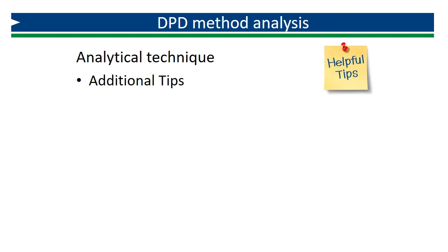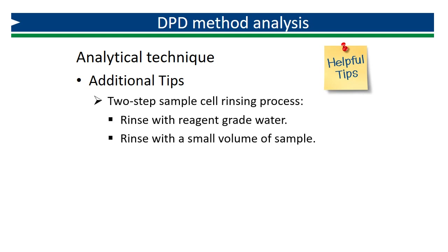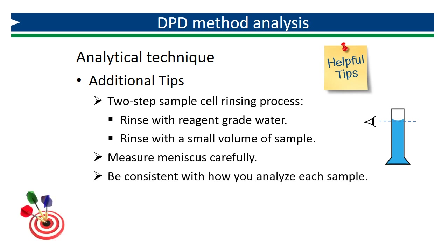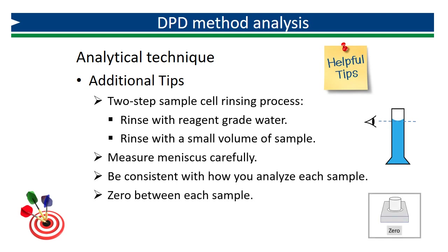Here are a few additional tips to eliminate sources of error. Use a two-step rinsing process between analyses. Start by thoroughly rinsing your sample cell at least twice with reagent grade water to remove all traces of residual reagent. Then rinse it again with a small volume of sample to displace the remaining water and eliminate any unwanted dilution of the sample. Measure your meniscus carefully and consistently to make sure the volume of sample is appropriate and consistent for each analysis. Always measure sample volume with the meniscus at eye level. Be consistent with how you analyze each sample — pay attention to the volume of sample, the orientation of the sample cell, your mixing procedure, and how thoroughly you wipe your sample cells. Finally, be sure to zero between each sample, using your measured sample before any reagent is added to zero.